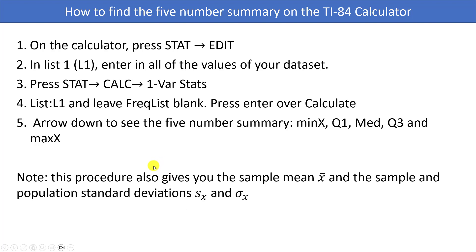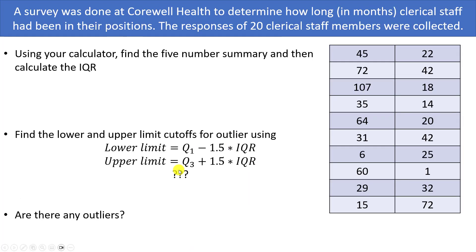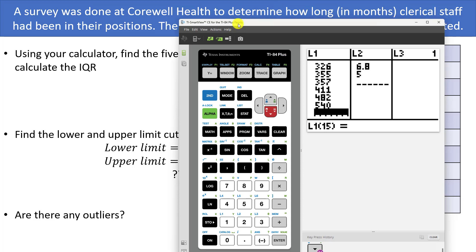We've been finding the five-number summary by hand, but if you have a TI-84 calculator, we can also find it there. Here is a data set from a survey done at Corwell Health to determine how long in months clerical staff had been in their positions. Responses from 20 clerical staff members were collected. We're going to use the calculator to find the five-number summary and calculate the IQR. Let me go ahead and grab my TI-84 calculator.